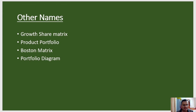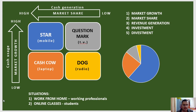BCG matrix also has other names: growth share matrix, product portfolio, Boston matrix, and portfolio diagram. If you have any questions regarding this diagram or concept, you can ask in the comment section. Thanks for watching and have a nice day.